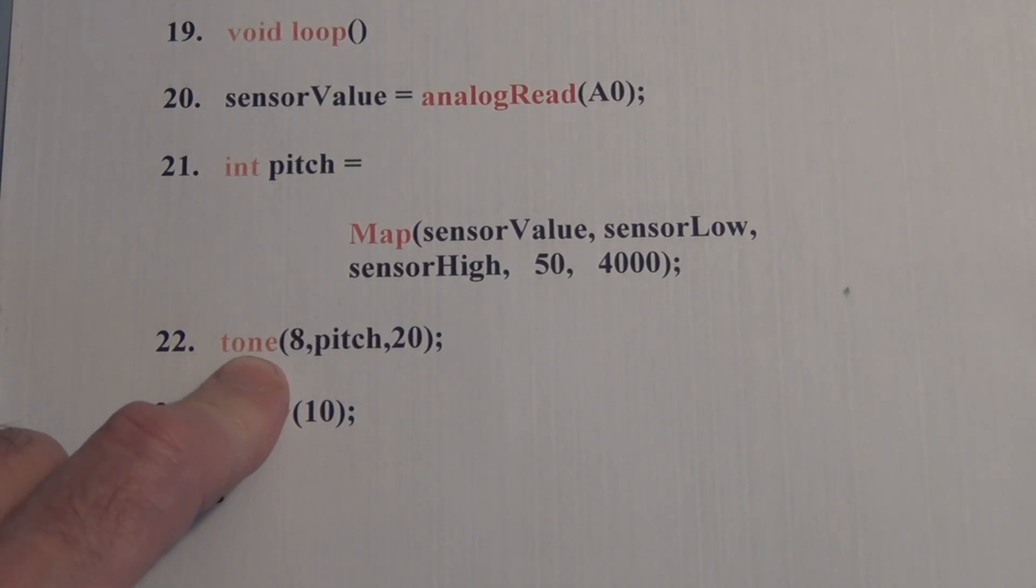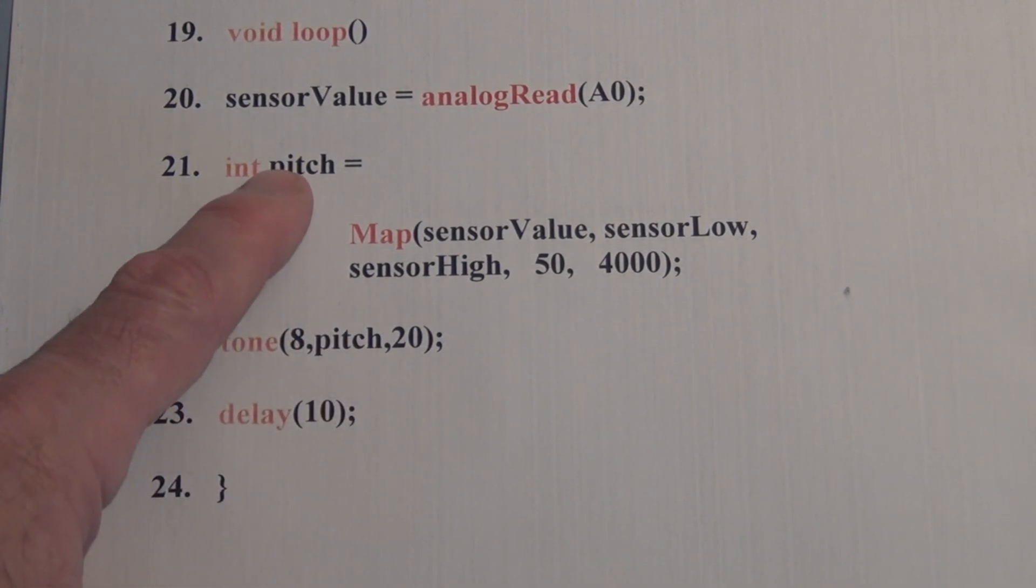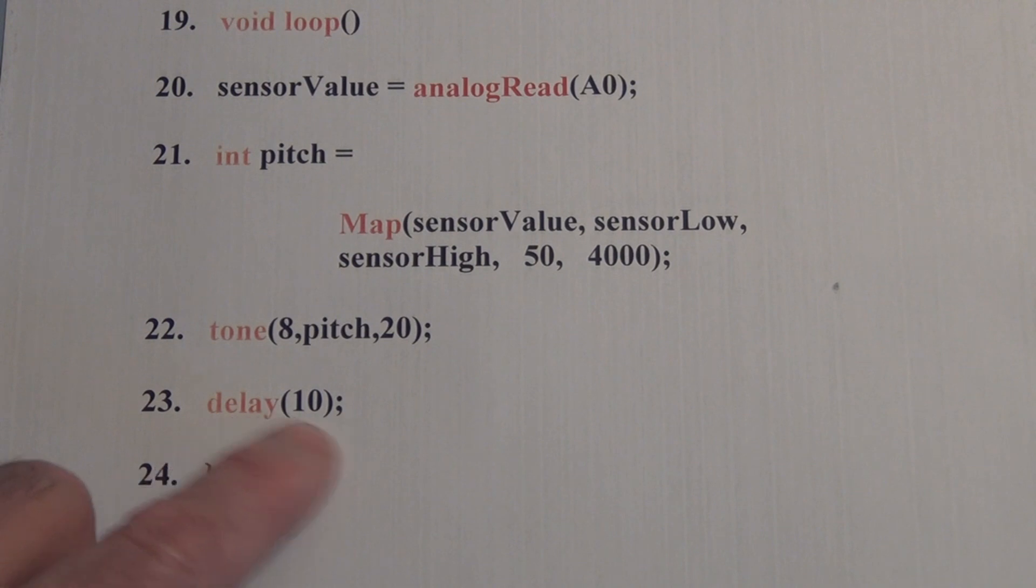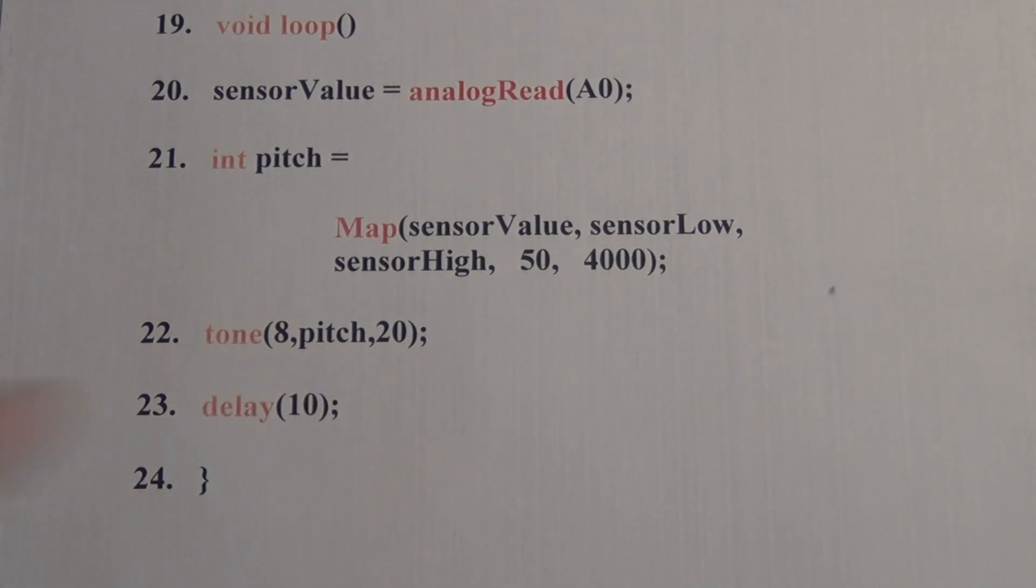Then we will call the tone function which has three arguments. What pin to play the frequency on so the piezo is connected to pin 8. What pitch to play so pitch was determined using this map function and then how long to play that note. Here we're using 20. Then we're going to have a delay to give time for that process to work and then it repeats. It goes back and it measures the light level and then does the calculation and gives us another note or frequency.